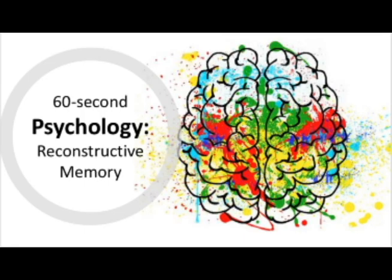It's also more difficult for us to remember things that are unfamiliar or unbelievable to us. If a piece of information doesn't make sense to us, our brain often takes the lazy option and changes these details to something more believable, again resulting in inaccurate details in the memory. This is called rationalisation.